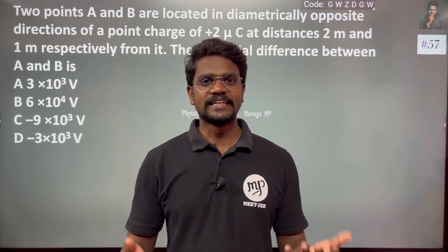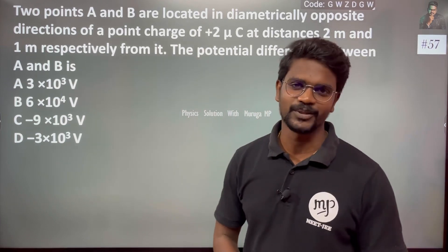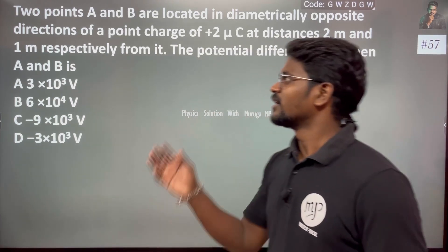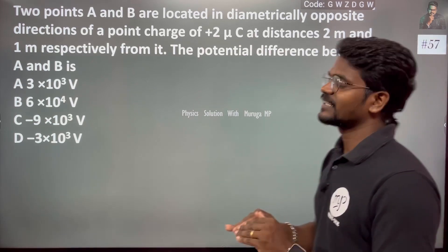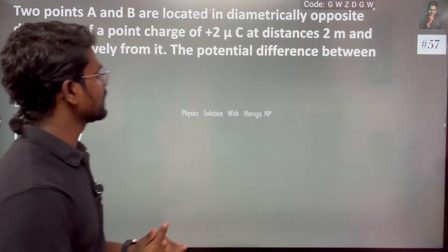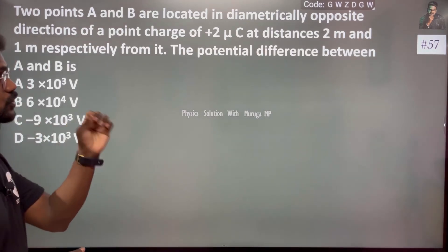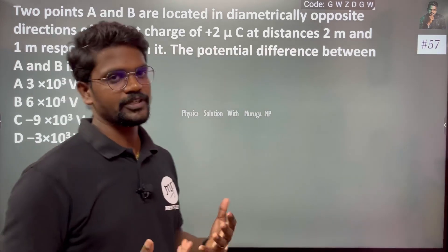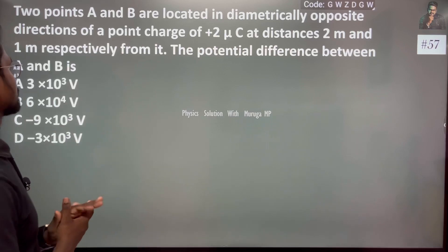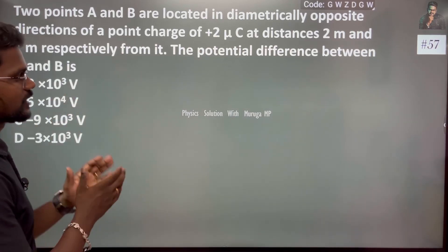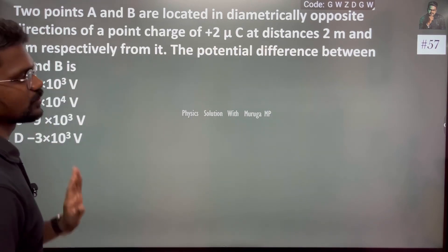Hi everyone. Two points A and B are located in diametrically opposite directions of a point charge of plus 2 microcoulombs — that is 2×10⁻⁶ coulombs — at distances of 2 meters and 1 meter respectively from it. This is a very simple and easy question.